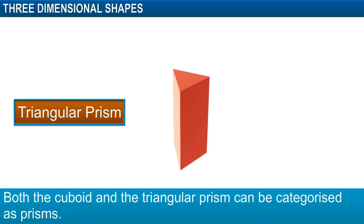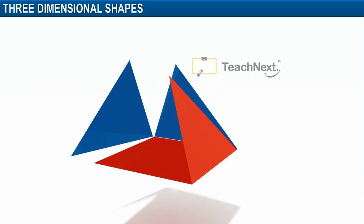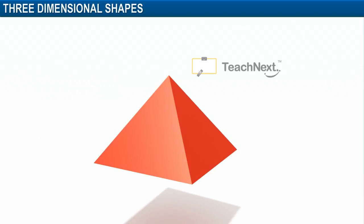Both the cuboid and the triangular prism can be categorized as prisms. If we replace the triangular base with a square base and add another triangular face, we get a square pyramid.